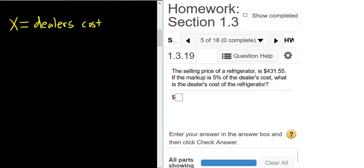Okay, so we know the refrigerator sells for $431.55. That's how much the refrigerator is selling for. The dealer obviously pays less because he's trying to make money.